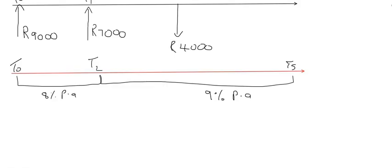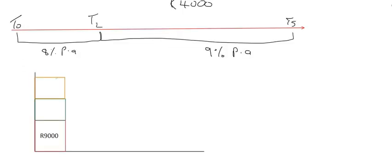I'm going to start with the bar graph technique where we look at the 9,000 rand separately. I've drawn in the 9,000 rand — it starts off with an initial amount of 9,000 rand and then it's going to grow. For two years it will have the eight percent interest, and then for a further three years it will grow at nine percent.